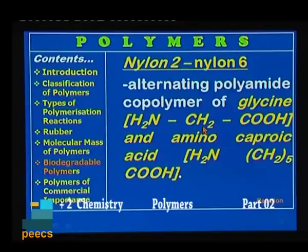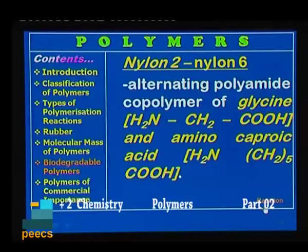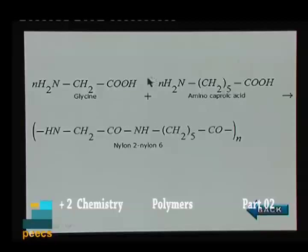Next is nylon 2-nylon 6 — it is again a copolymer. It is an alternating polyamide copolymer of glycine and amino caproic acid. Glycine, which is an amino acid, reacts with amino caproic acid and undergoes condensation between the COOH group and NH₂ group to form nylon 2-nylon 6.